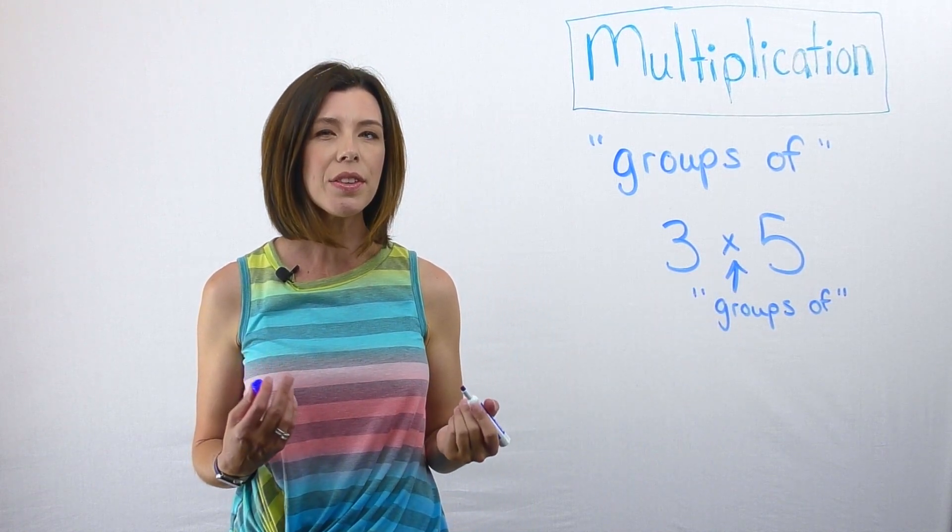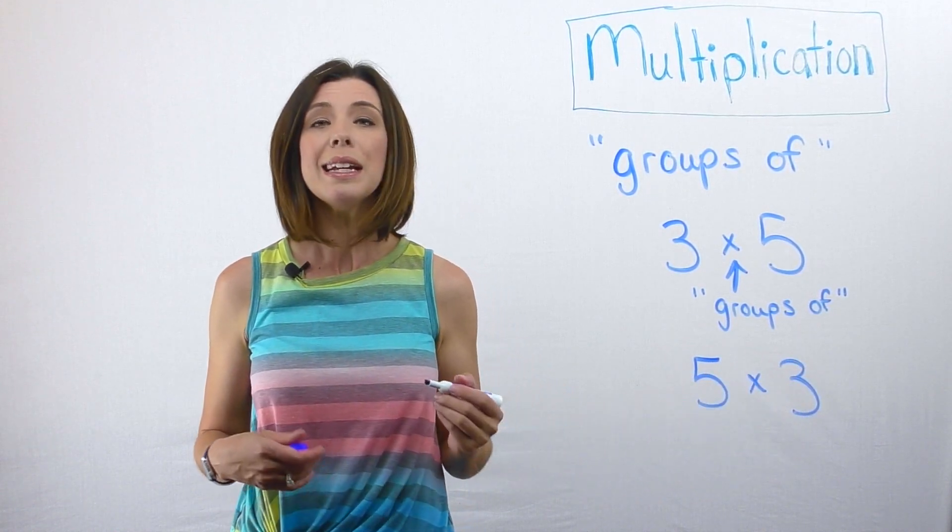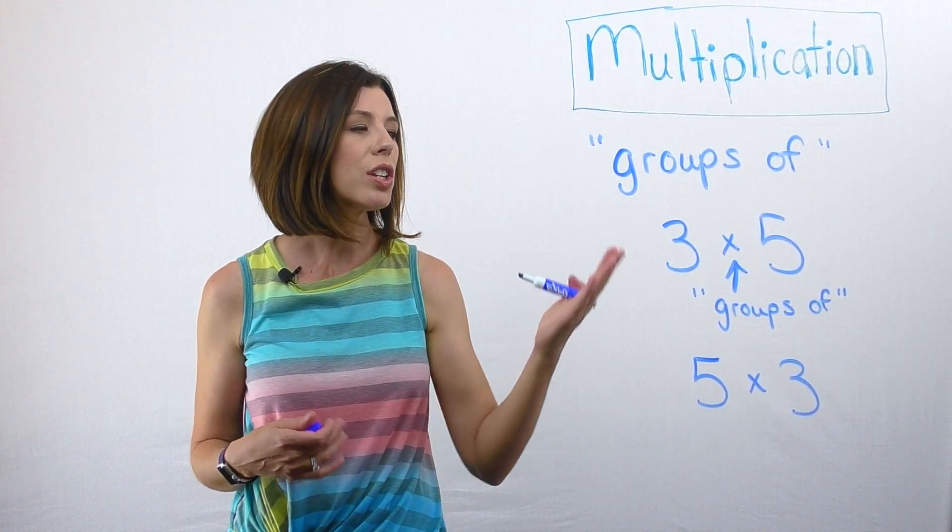Now you might be thinking because of the commutative property of multiplication, five times three is mathematically equivalent to three times five.